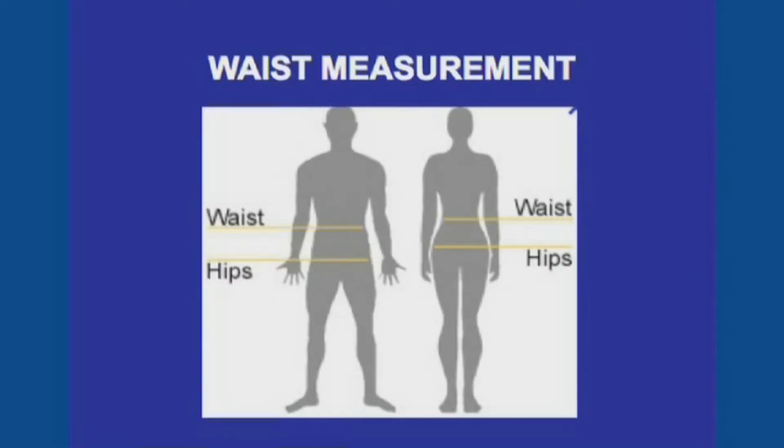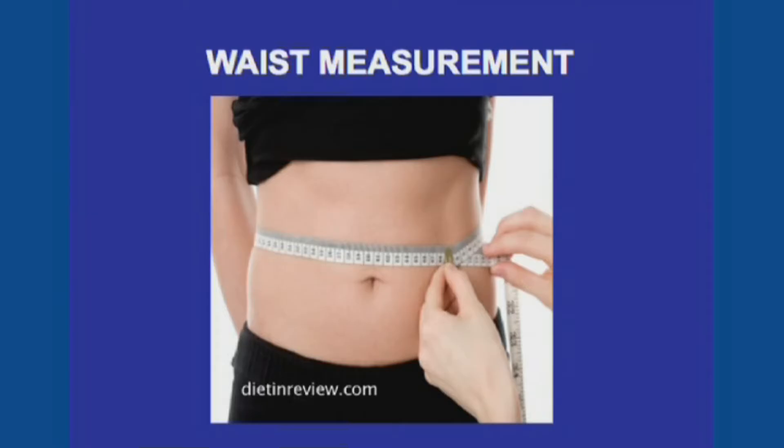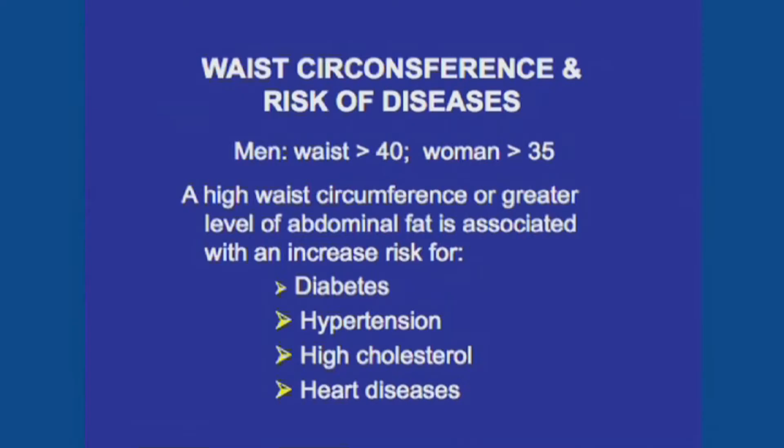Are there any other ways to measure obesity besides the BMI system? We can measure the circumference of the waist and the circumference around the hip as well. You can use the ratio between the waist and the hips to calculate how much obesity you may have. To keep it simple, you just use the measurement of the waist around the navel. In any man with a waist circumference over 40 inches, that is considered obese. Any woman with a waist circumference over 35 inches is considered obese.